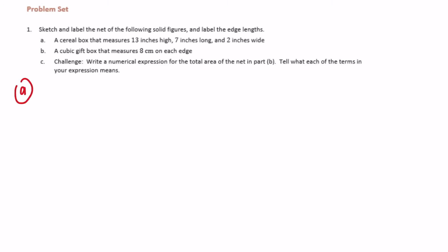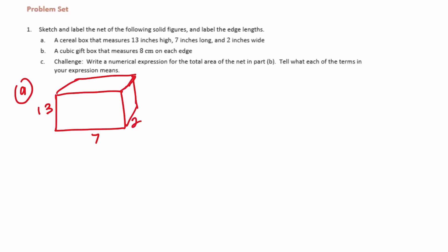First I'm going to draw that rectangular prism because it helps me visualize what I'm then going to draw in my net. So it's 13 inches high, 7 inches long, and 2 inches wide — it should be a little taller and skinnier, but that's okay. I'm going to start by drawing the front face here, the 13 by 7.